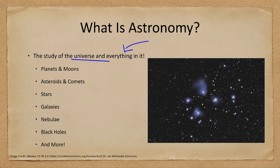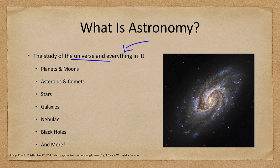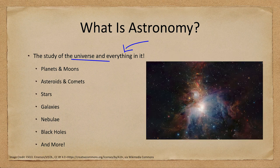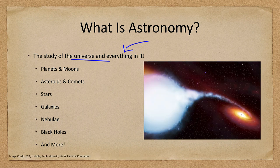We will look at stars — here's an example of a star cluster known as the Pleiades. Individual stars often don't look like much because they're just points of light, but we'll study things like star clusters. We'll look at galaxies such as the spiral galaxy seen here, perhaps similar to our own Milky Way if viewed from outside. We will also look at nebulae — a nebula can be a star-forming region or the debris left behind when a star dies. We'll look at black holes, seen here as an artist's conception of material swirling in, and of course much more over the course of the semester.